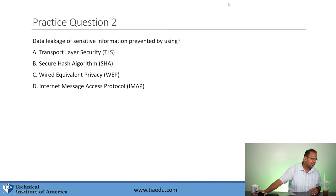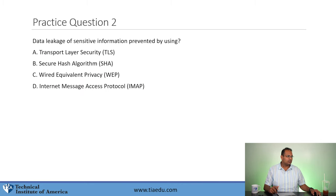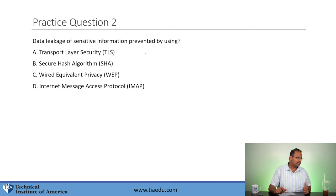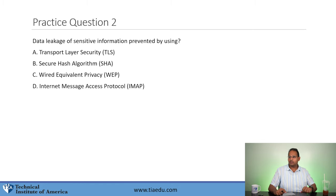Question 2: Data leakage of sensitive information is prevented by using — TLS, SHA, WEP, or IMAP? Put the answers in the box.